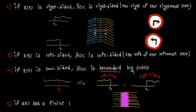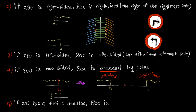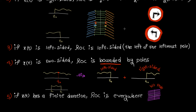Rule number five: if x(t) has a finite duration — meaning the signal starts and ends at two arbitrary times — the ROC is everywhere, since there is no pole to interfere with convergence.